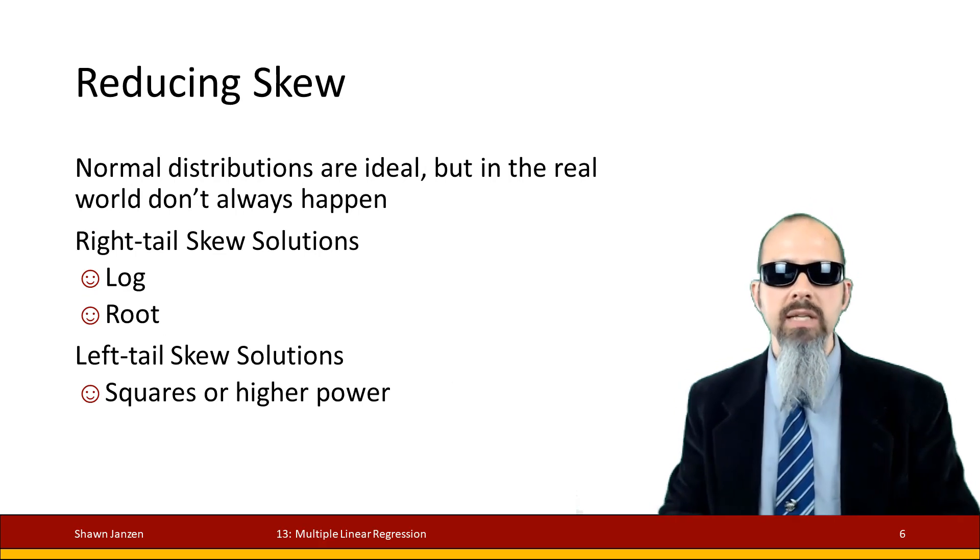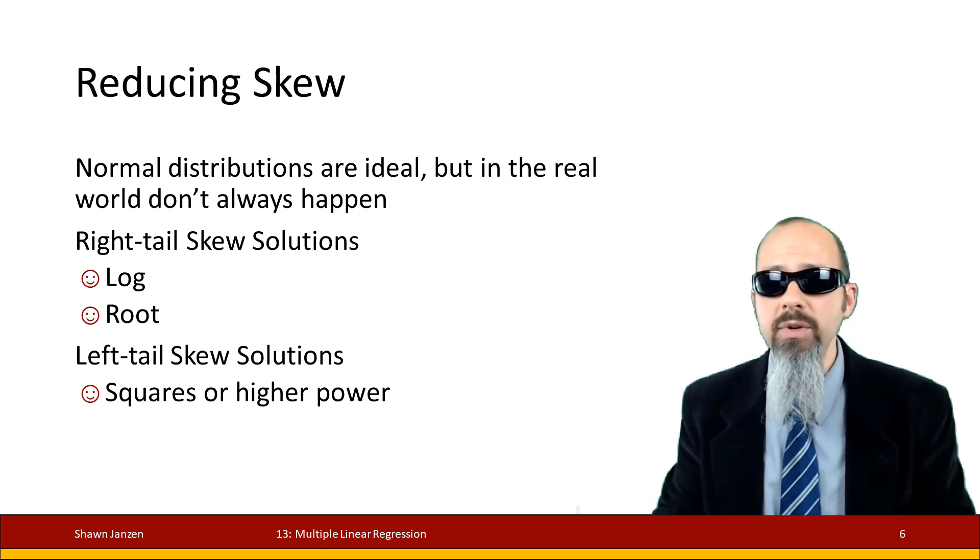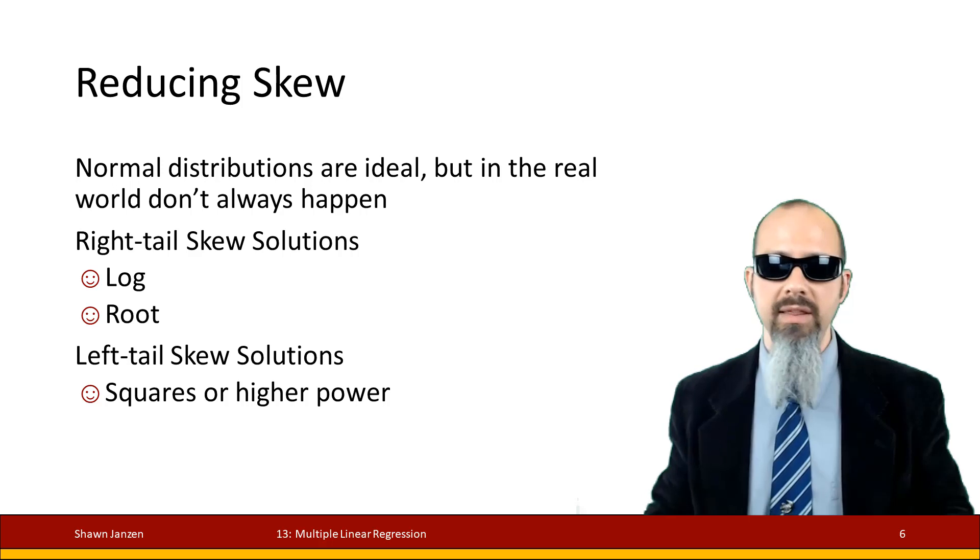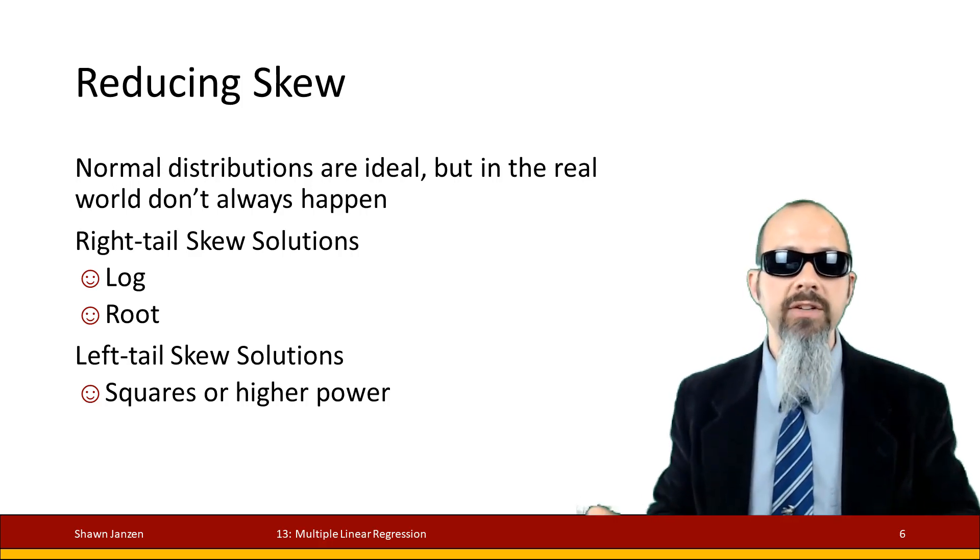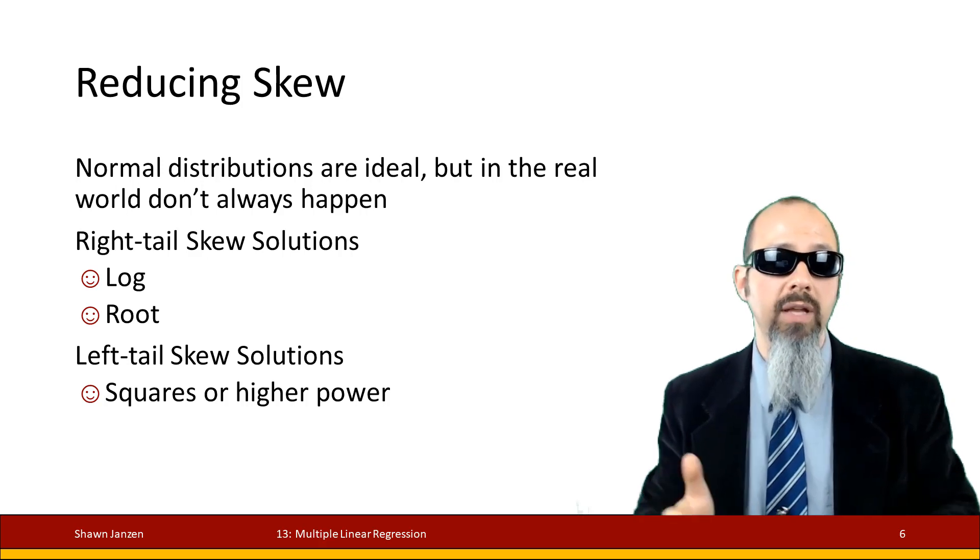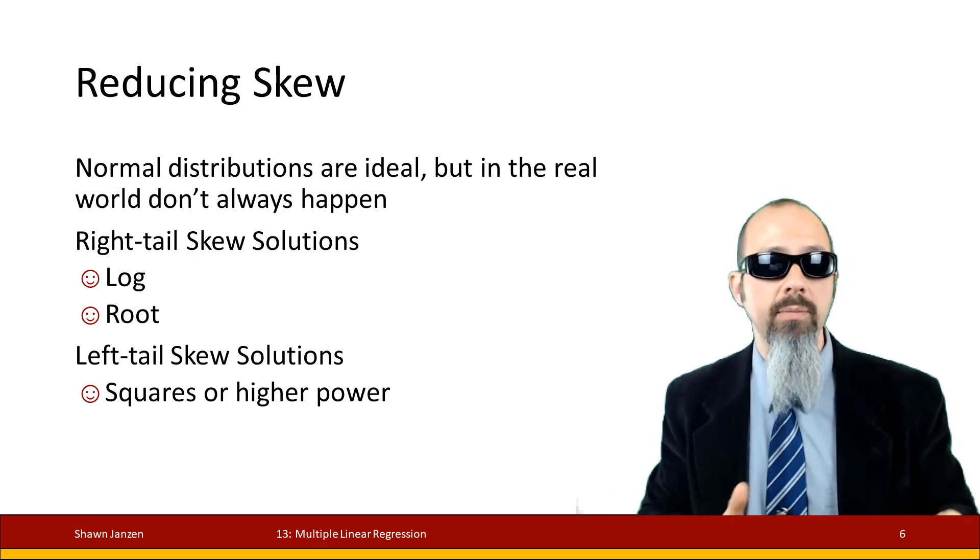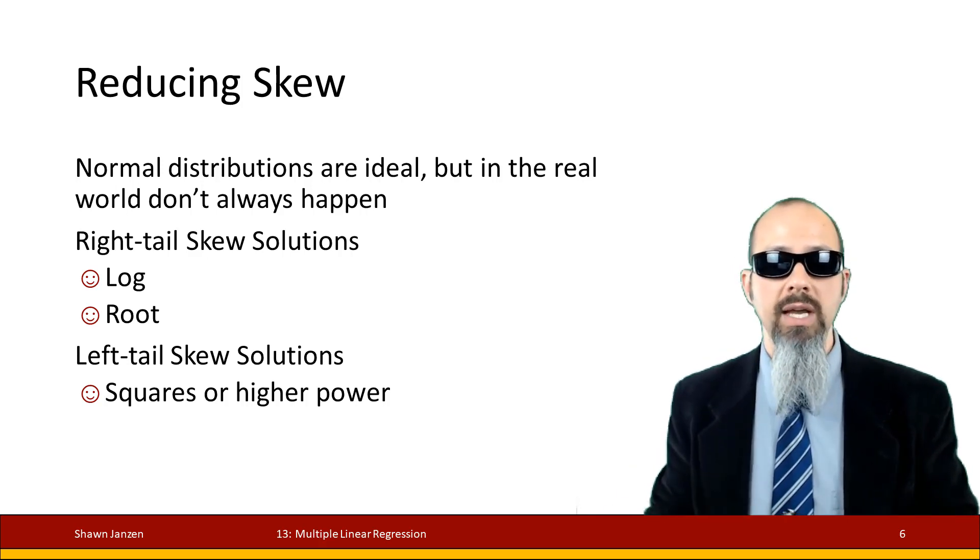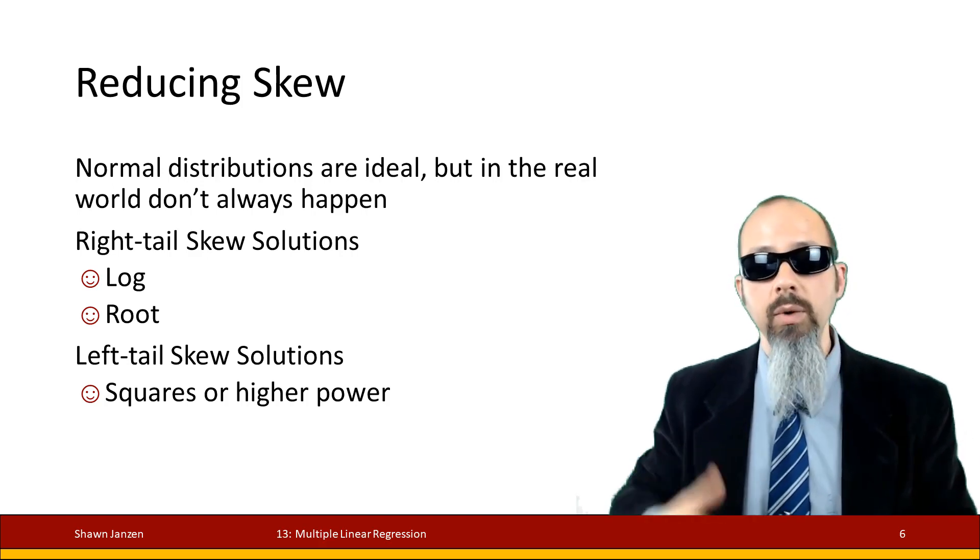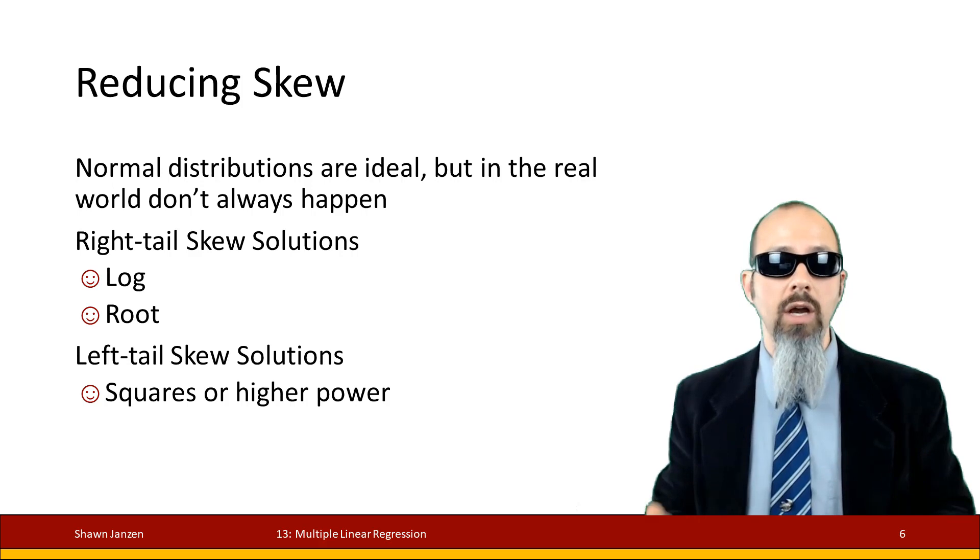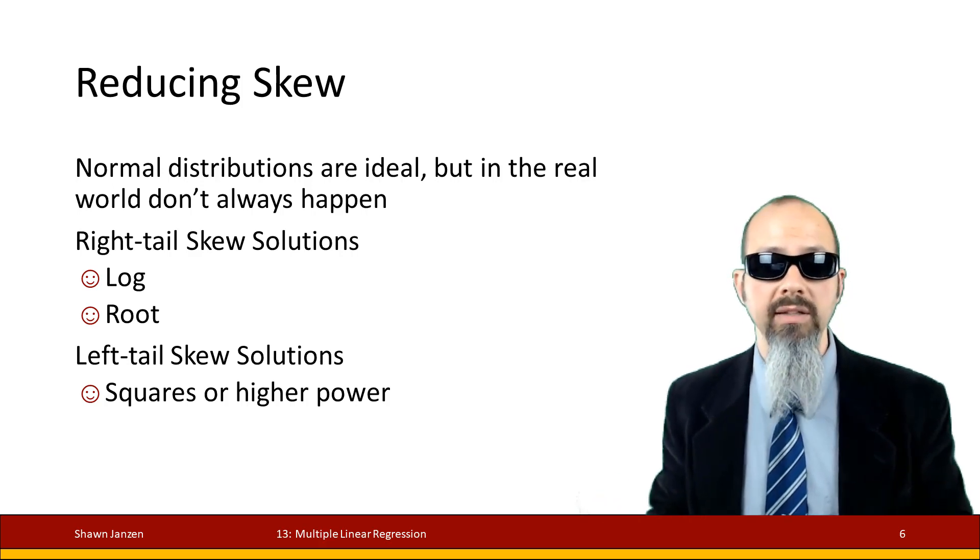Reducing skew. This is something, again, when it's nice to have normal distributions, but in reality these things are not often found. And so there's different types of skew that we have. We've got right tail and left tail, which is the positive and negative skew. And depending on the type of skew, we've got different transformations that we can apply that we're going to talk about here, like logging, rooting, squaring, things like that.